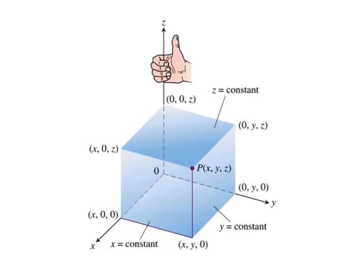Now, from the corner of that rectangle, the point x, y, zero, we go up z in the z direction. And so we end up with a three-dimensional box and the point x, y, z is at the corner of that box.